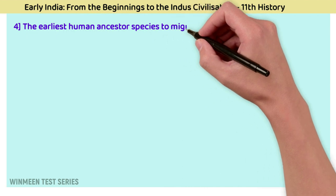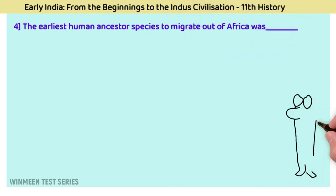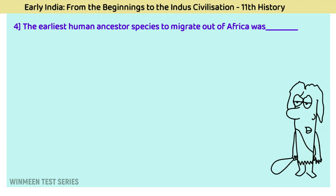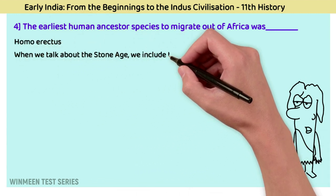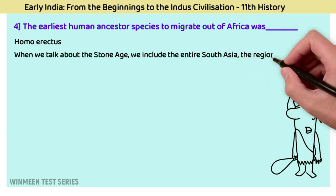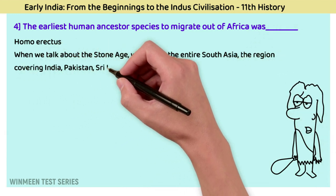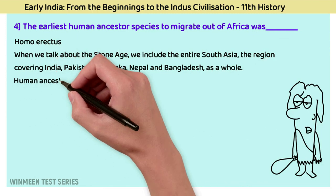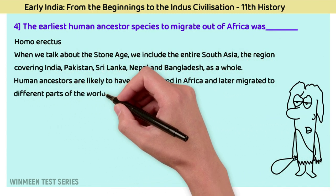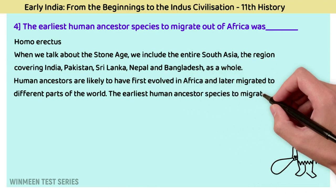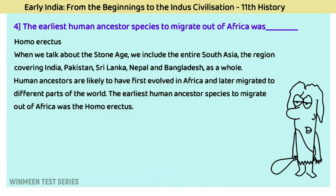Question 4: The earliest human ancestor species to migrate out of Africa was? The answer is Homo erectus. If we consider the Stone Age, we can include the entire South Asia — covering India, Pakistan, Sri Lanka, Nepal, and Bangladesh. Human ancestors likely first evolved in Africa and later migrated to different parts of the world. The earliest human ancestor species to migrate out of Africa was Homo erectus.